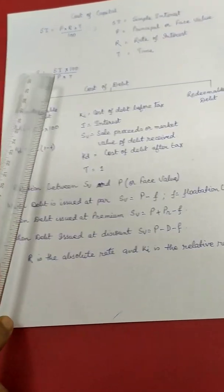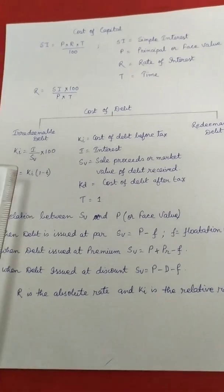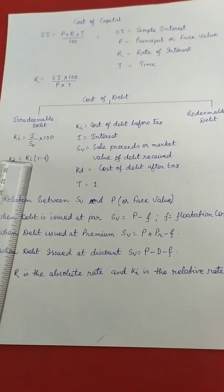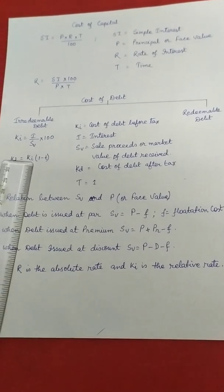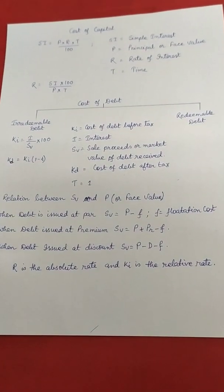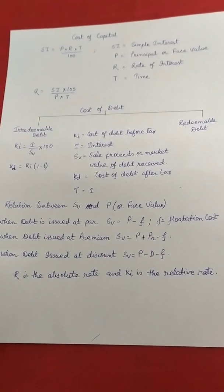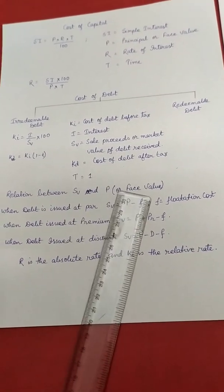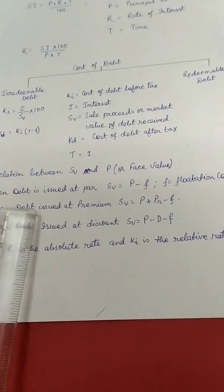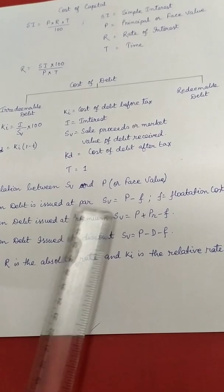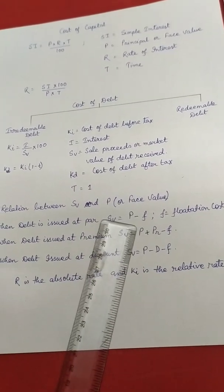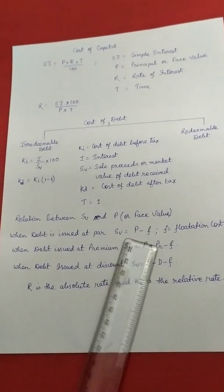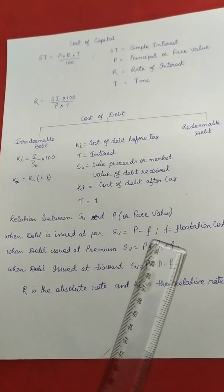The formula for cost of debt before tax is analogous to computing R in simple interest, with T removed since interest is computed annually. In simple interest, I is calculated on face value, and in cost of debt before tax, I is also computed on face value. We are calculating the effective rate of interest on the market value of debt raised. Flotation cost is the administrative cost incurred to raise the debt, typically varying from 4 to 6%.